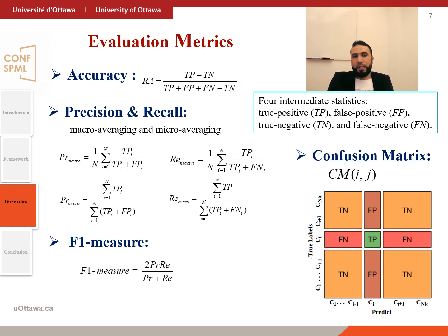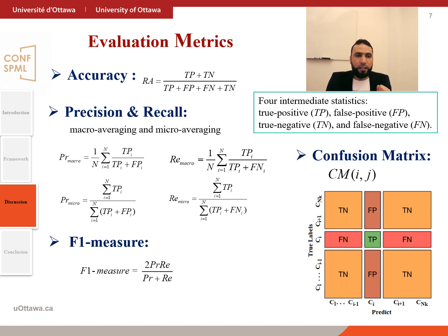For evaluation metrics, following statistical definitions, we have true positive, false positive, true negative, and false negative. Accuracy is the sum of true positive and true negative divided by all statistics. We also have precision and recall. Because we have multi-class recognition, we need to average the recall and precision.